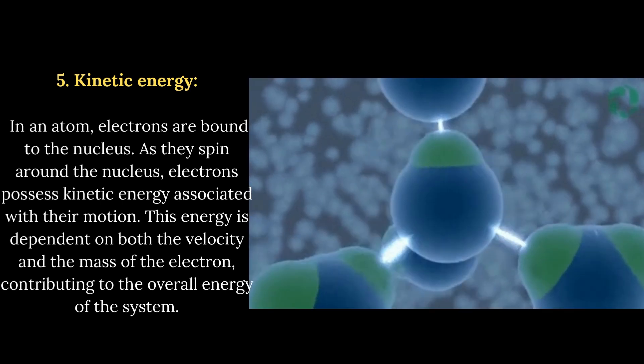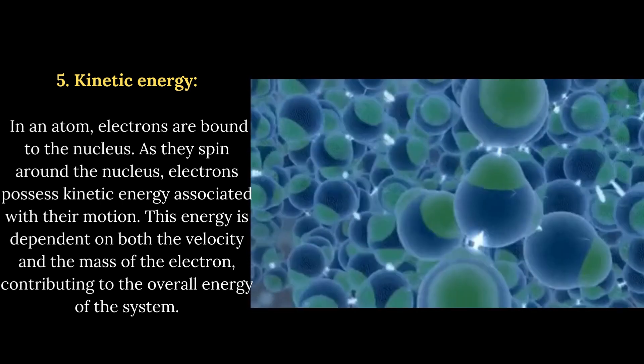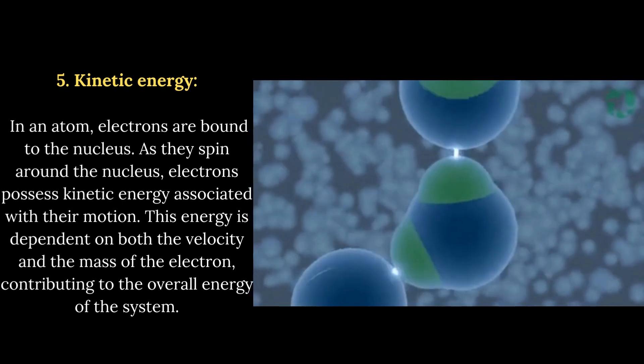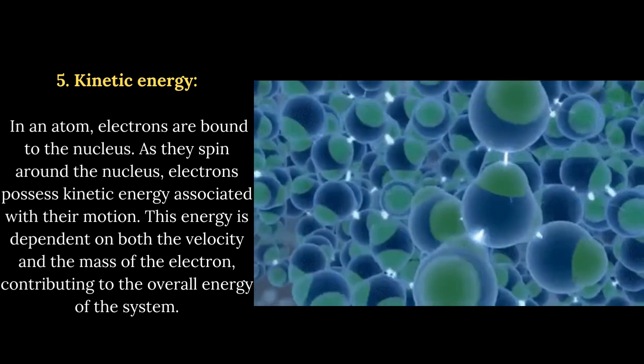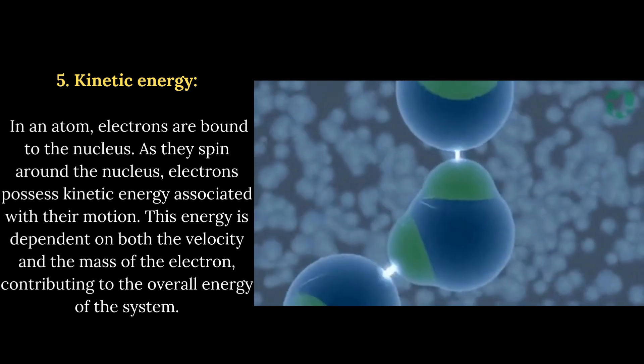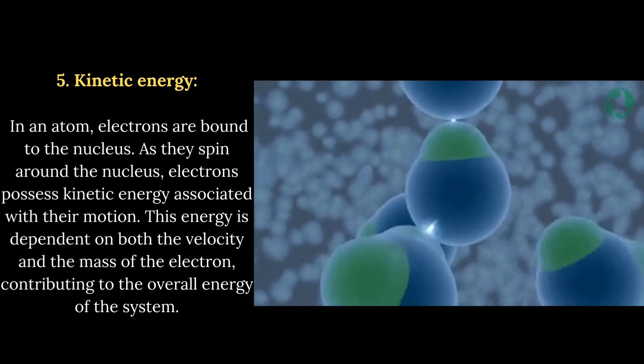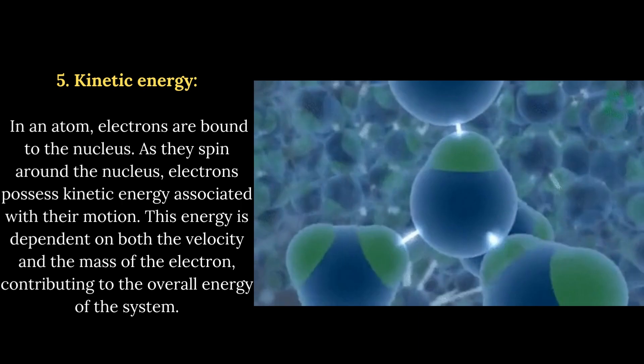In an atom, electrons are bound to the nucleus. As they spin around the nucleus, electrons possess kinetic energy associated with their motion. This energy is dependent on both the velocity and the mass of the electron, contributing to the overall energy of the system.